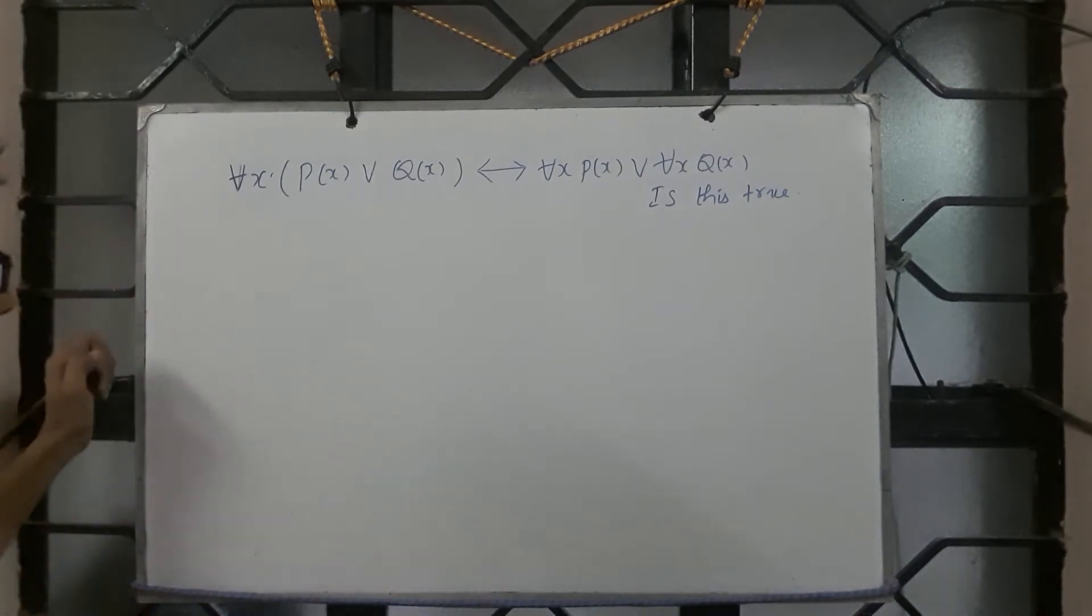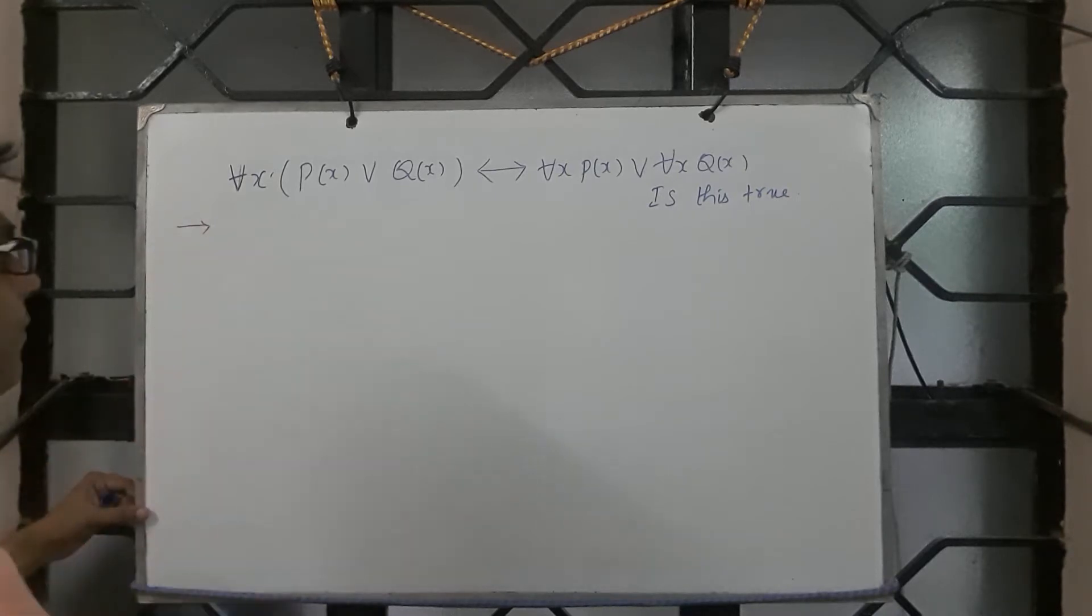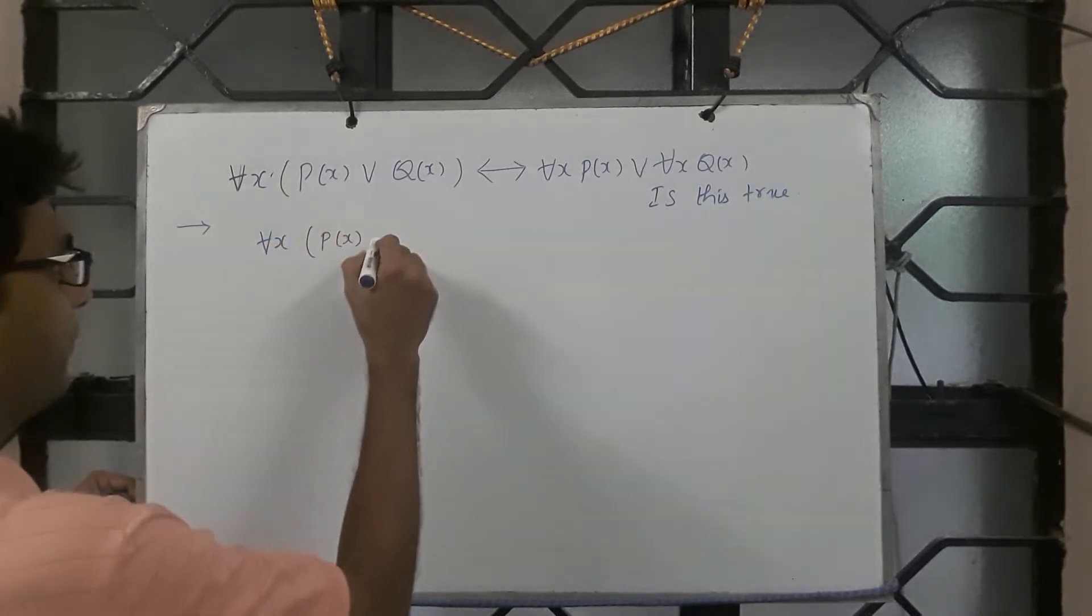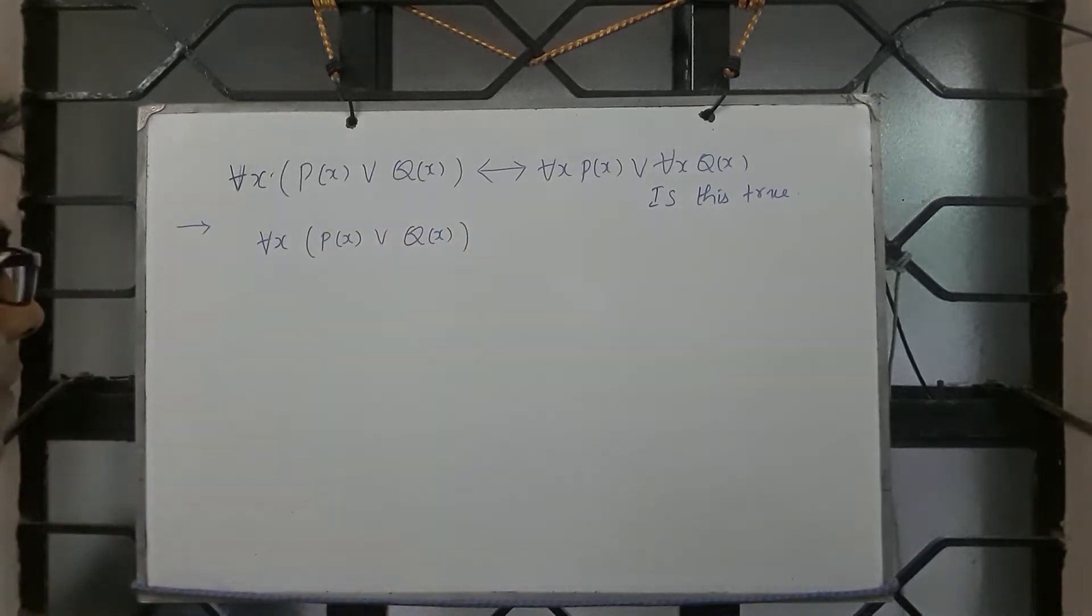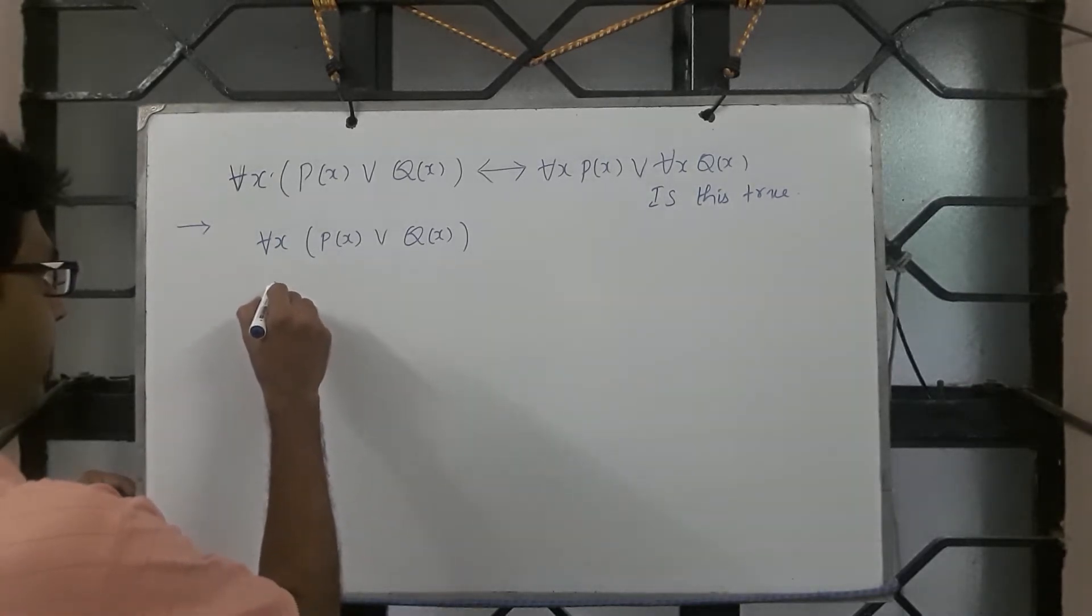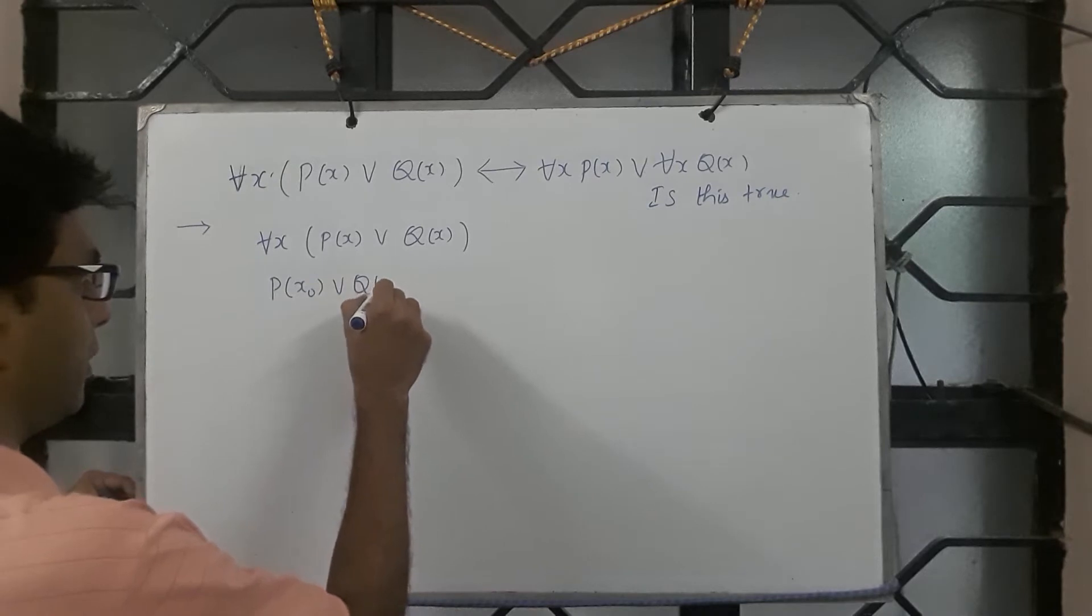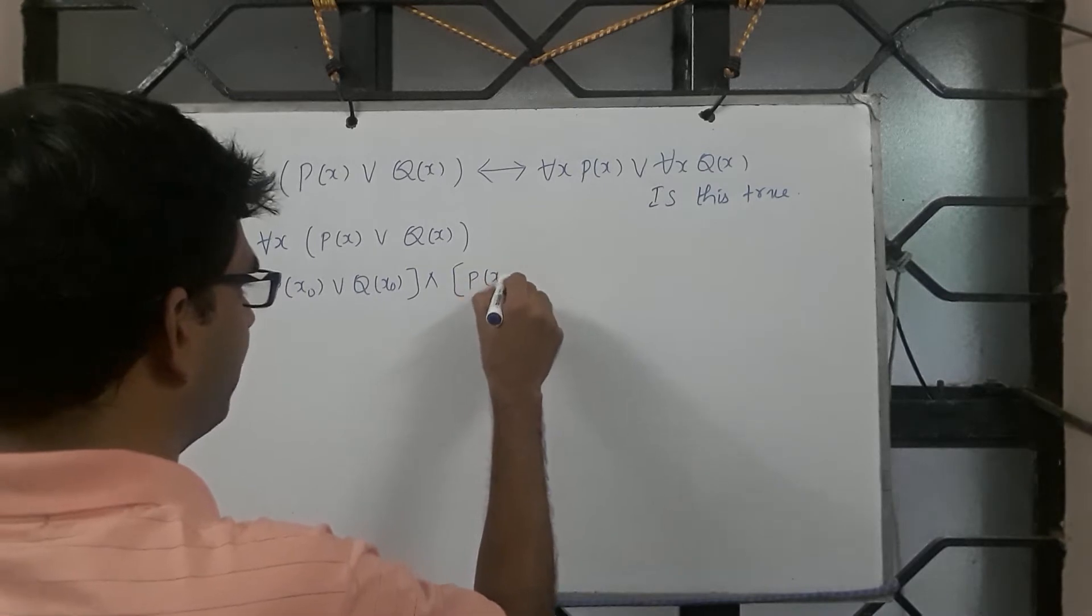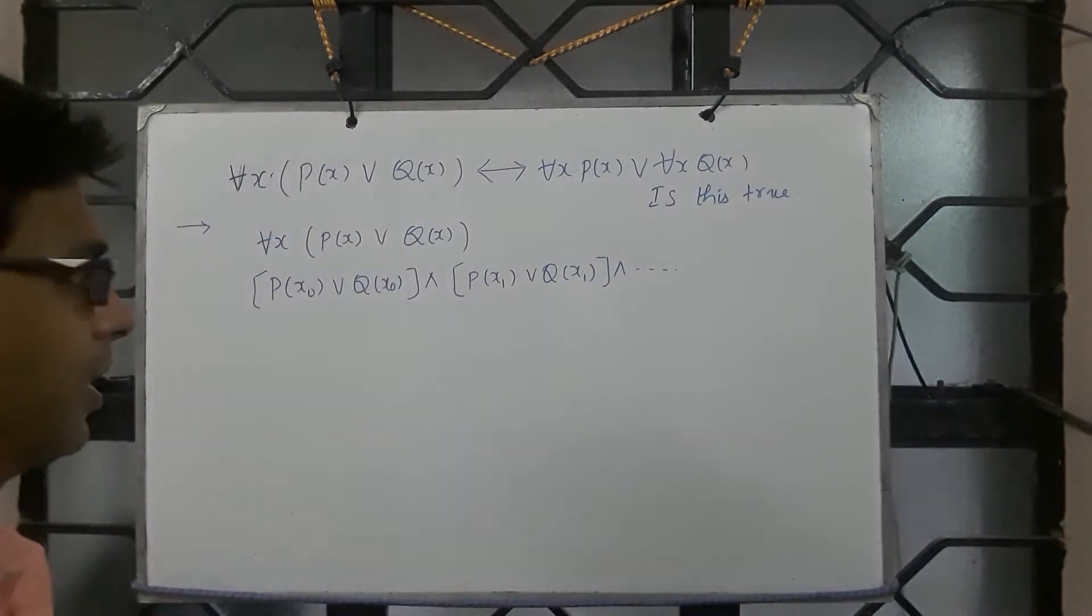Just like the way we did before, let us make an attempt. Forward direction: let us take for all x, P(x) or Q(x). Now apply the definition. If you apply the definition you get P(x₀) or Q(x₀) and P(x₁) or Q(x₁) and so on.